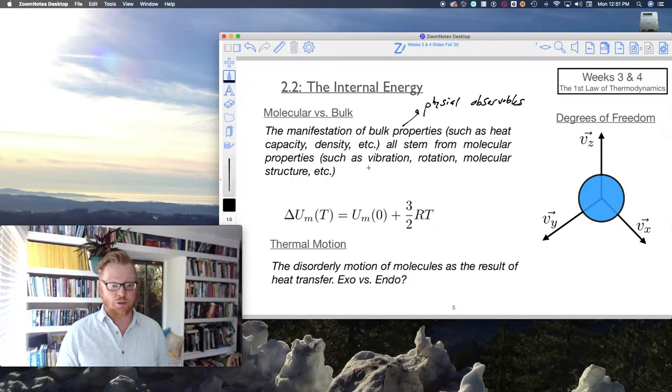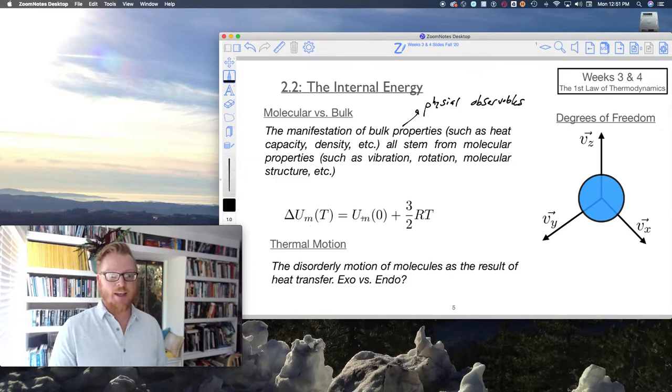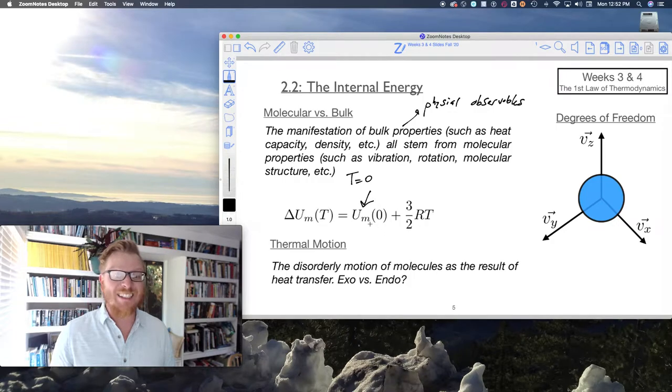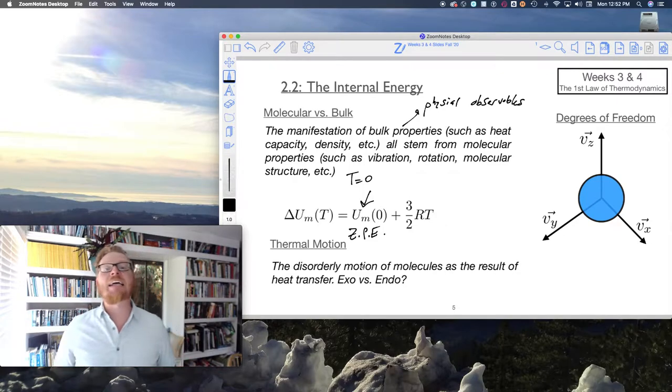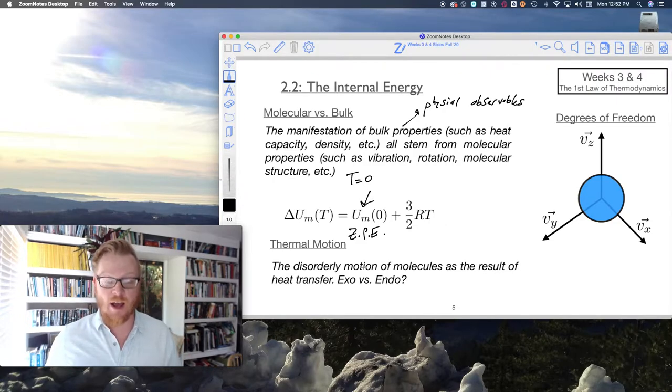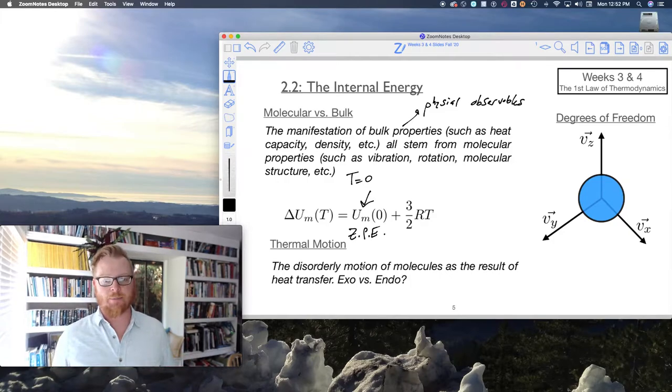So the first example of that is the internal energy of a simple monatomic gas. Which here I have that equation written for you right here. Change in molar internal energy, U_M as a function of T is equal to U_M zero. So there's this constant here where when T is equal to zero, we still have some amount of internal energy. That's called the ZPE, the zero point energy. So even at zero Kelvin, there is still an interaction between electrons and protons, and that gives us some base zero point energy.